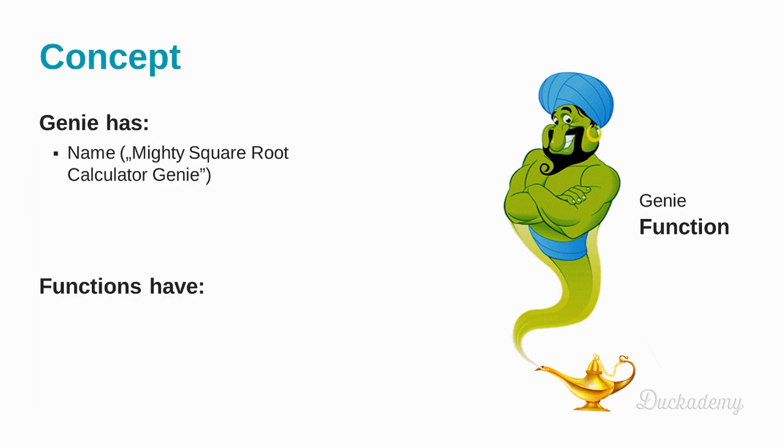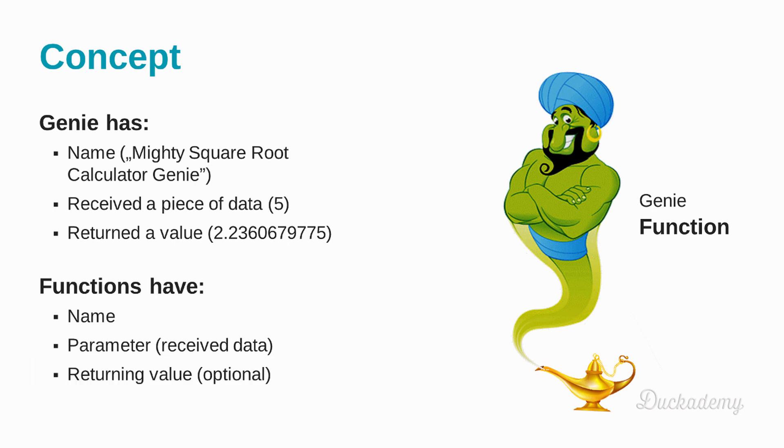The genie has a name. In this case, mighty square root calculator genie. And he received a piece of data. This was 5. And return the value that was the square root of the 5. Functions have name. Functions have parameters. These are the received data. And they can return a value, which is an optional thing.